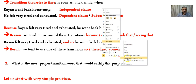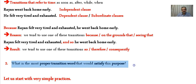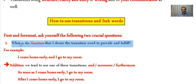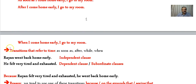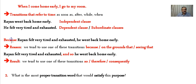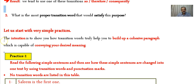By now you have figured out what I'm doing: I have answered the question 'what is the most proper transition word that would satisfy this purpose?' We ask ourselves: what is the function I desire the transition word to fulfill? I've given examples for addition, time, reason, and result — we call these functions — and I choose transition words that satisfy my purpose.